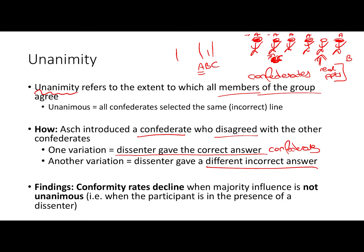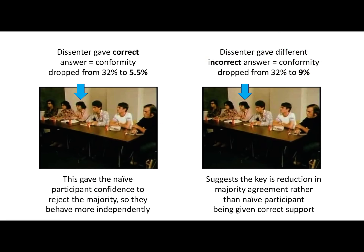When there was no longer unanimity in the group, conformity rates declined. In the first variation, where the dissenter gave the correct answer, conformity dropped from 32% in the baseline to 5.5%. When a dissenting confederate gives the correct answer, this gives the participant the confidence to reject the majority and behave more independently — hearing someone say the correct answer allows them to also give it.